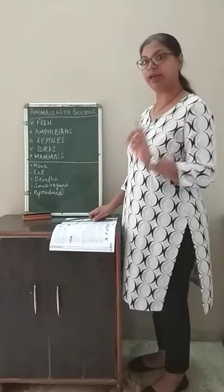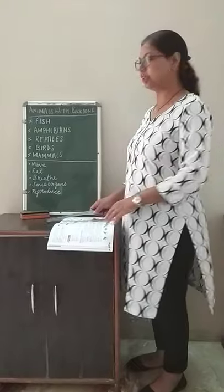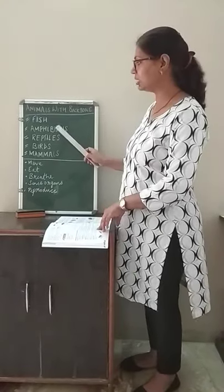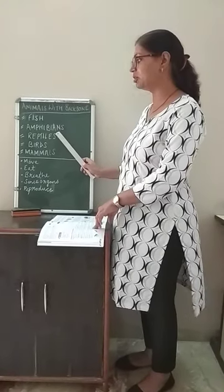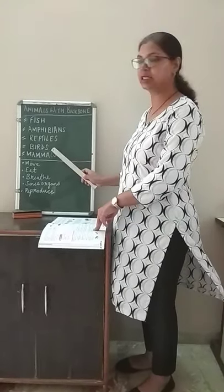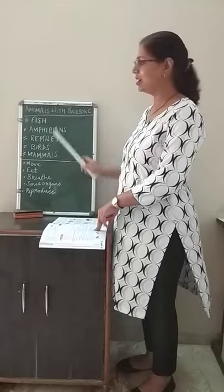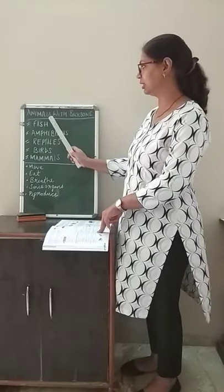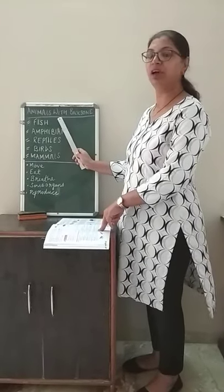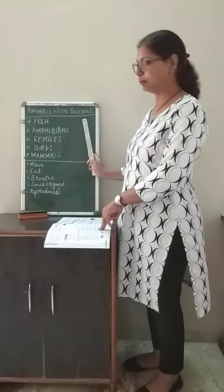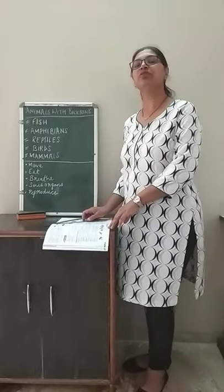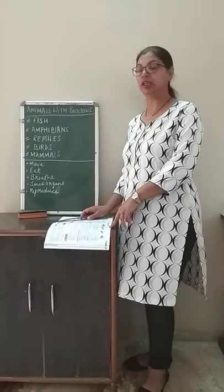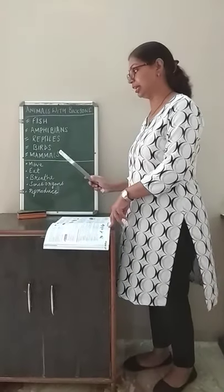I have already explained to you about these animals: fish, amphibians, reptiles, birds, and mammals. These are the animals which come under the category of animals with backbone. Now there are some special qualities of these animals.